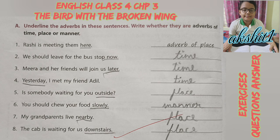Underline the adverbs in these sentences and write whether they are adverbs of time, place, or manner. First: Rashi is meeting them here — 'meeting' is the verb and 'here' is an adverb of place. Second: We should leave for the bus stop now — 'leave' is the verb and 'now' is an adverb of time. Third: Meera and her friends will join us later — 'join' is the verb and 'later' is an adverb of time.